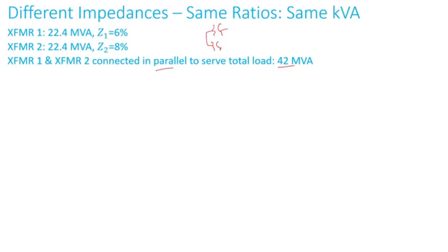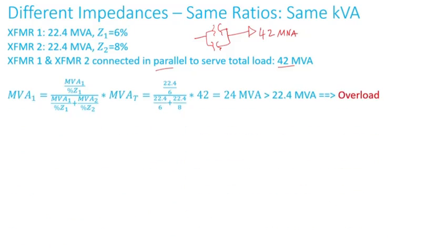So basically you have transformer one and transformer two connected with a load of 42 MVA — you might have different feeders but just for illustration purposes. Each transformer is rated 22.4 MVA. If I apply the equation I showed in Part 1, I get the following results.